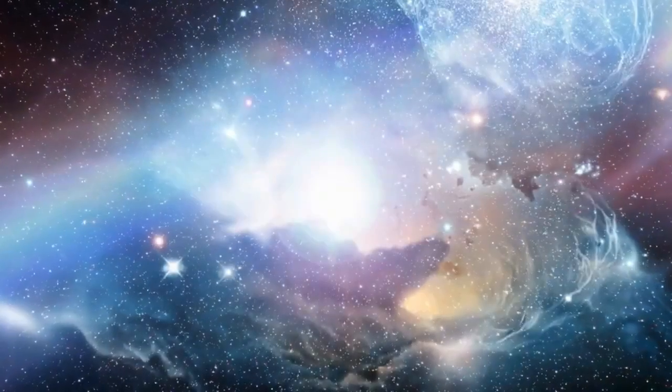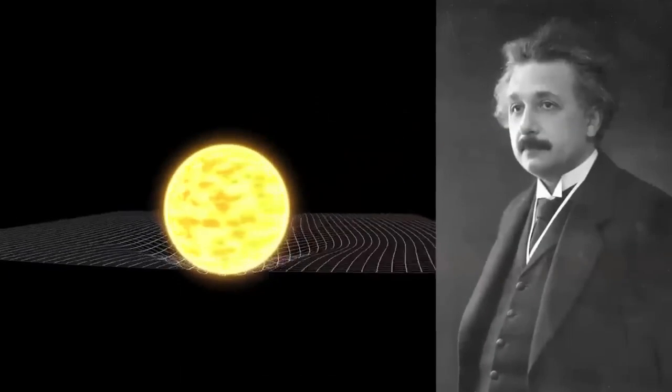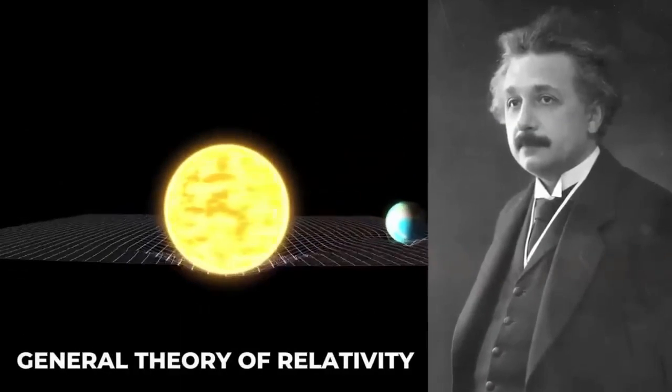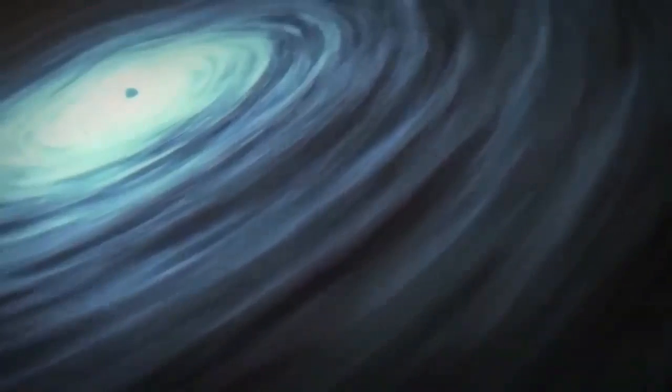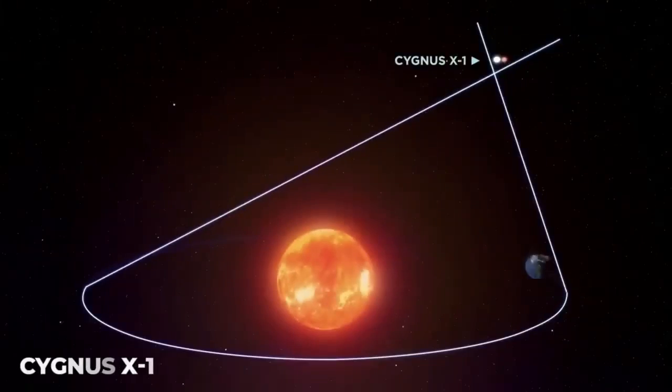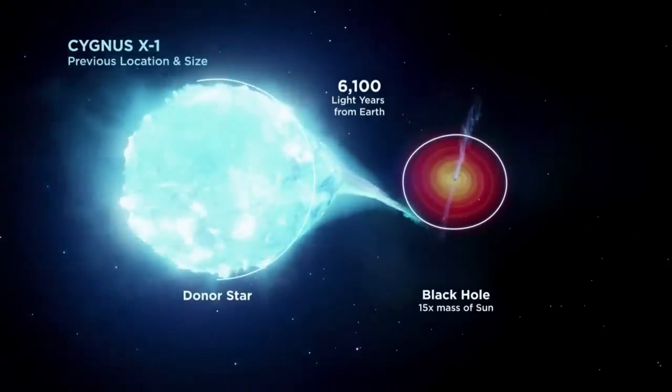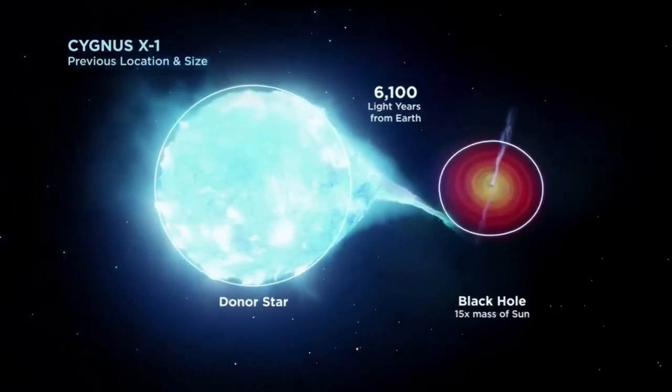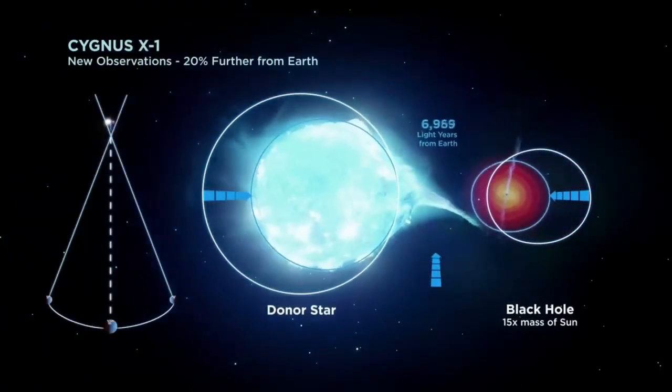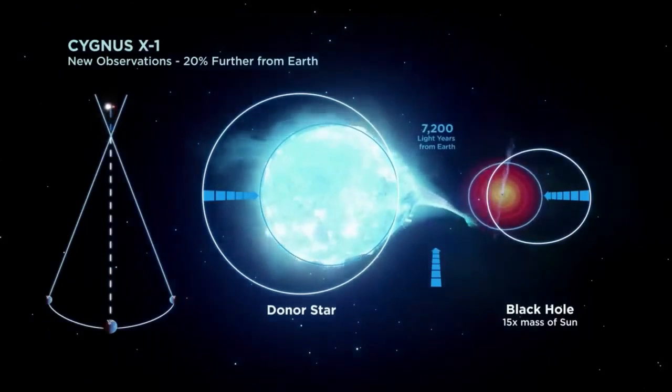For centuries, scientists have been fascinated by these mysterious objects, which were predicted by Albert Einstein in his theory of general relativity in 1915. However, it wasn't until the late 1960s that scientists were able to officially prove their existence. This happened when researchers studying the Cygnus constellation noticed an unusually bright blue star emitting x-rays and orbiting a massive black something. Further investigation revealed that the x-rays were being sucked into this enigmatic entity, leading scientists to believe it was a black hole.